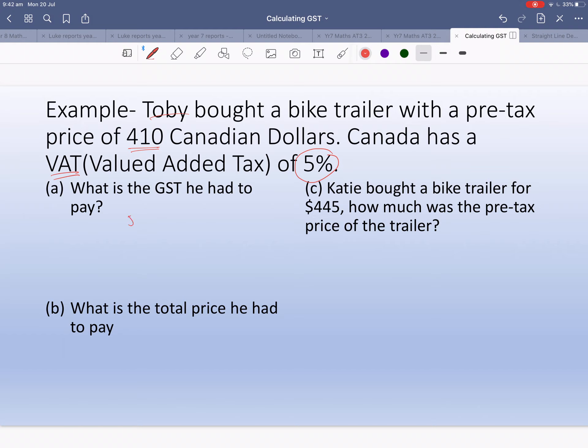Toby bought a bike trailer for $410 Canadian dollars. What's the GST he had to pay? 5% of $410. In English first, then change to maths: 5% times 410. Ten percent of 410 is 41, so 5% will be half of that, $20.50. I'll type it in my calculator: $20.50. What is the total price he had to pay? Total price is $410 plus $20.50, which equals $430.50 including the tax.